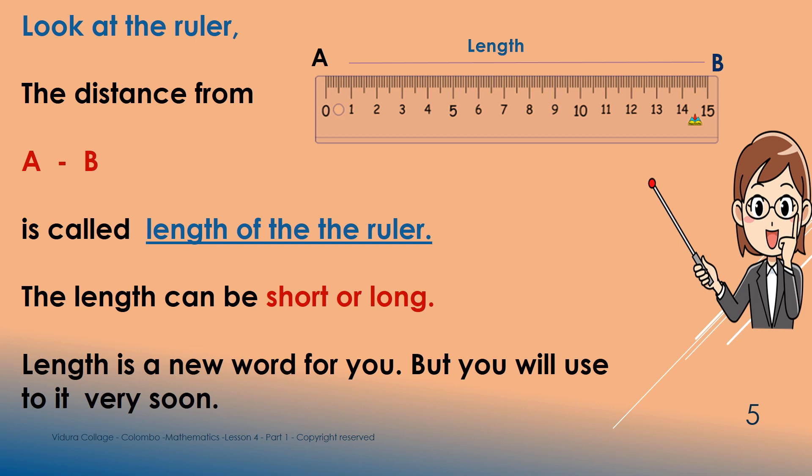Ok, you also can name the ruler like that. Ok, now you can see the area between A and B. The distance between A and B or the area between A and B is called as length. This length can be short or long. Ok, repeat after me children. Length can be long or short.